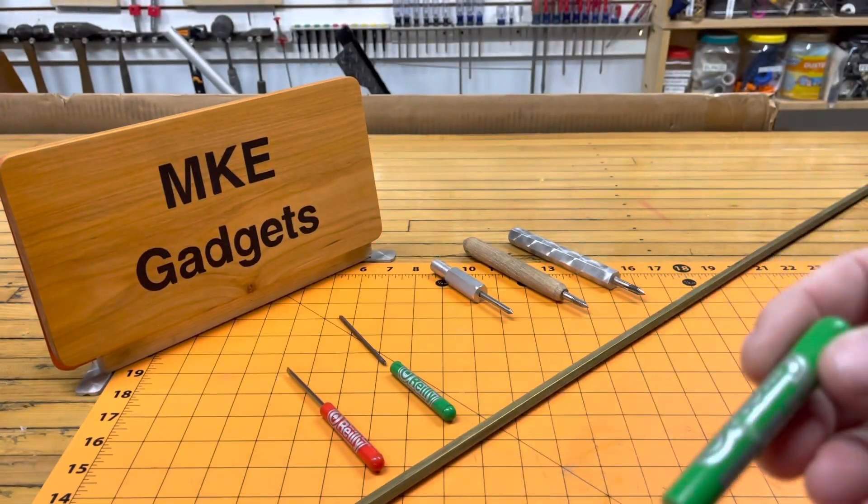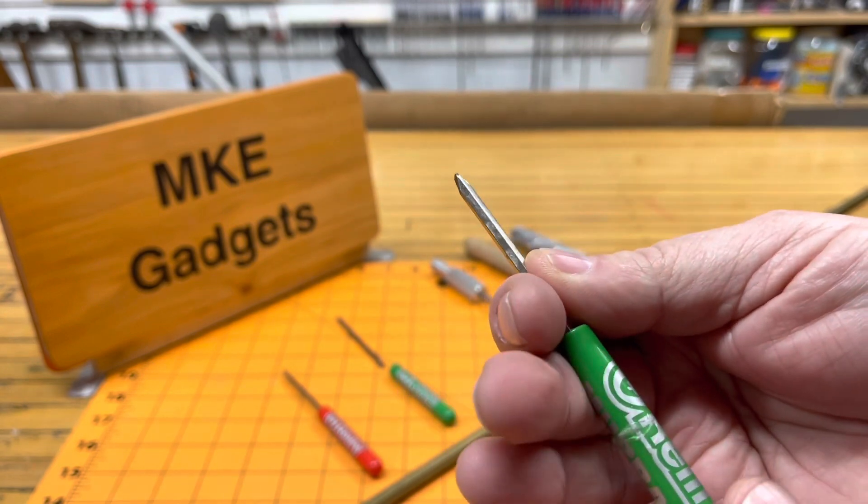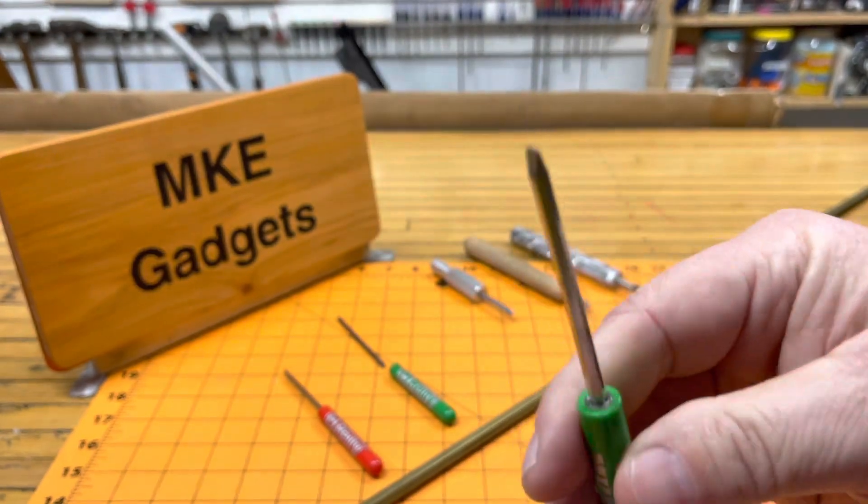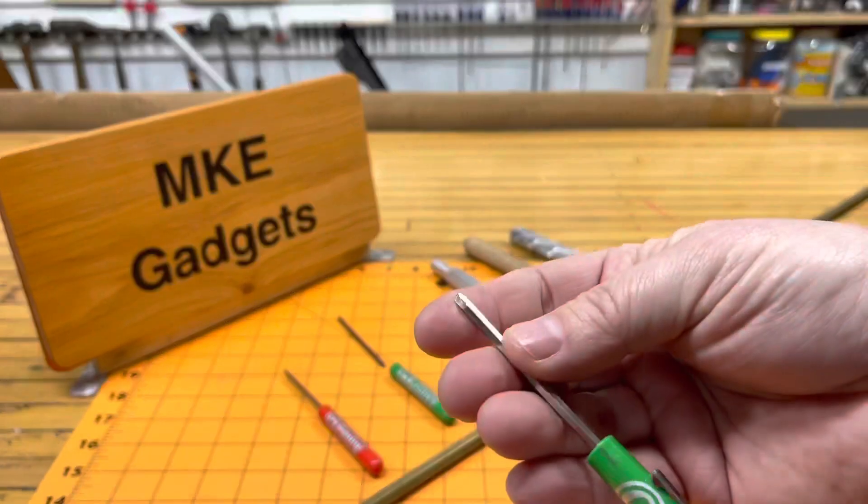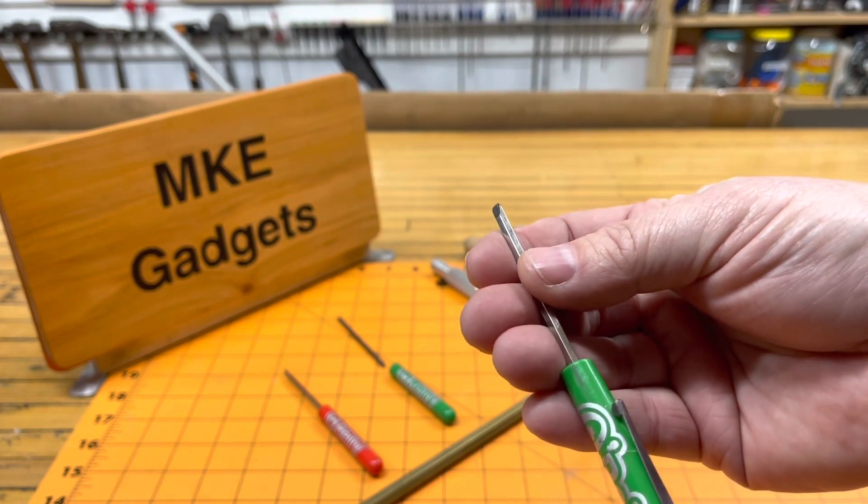You can see right here I glued this with some CA glue because this plastic becomes brittle after a while and when you pull this in and out and push it back it breaks. I thought, well I really like the double-ended feature here. I really like these screwdrivers. How can I fix them?